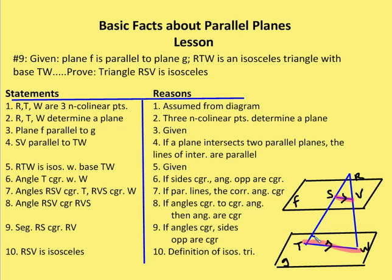I also know that angle RSV is congruent with angle RVS because if there are parallel lines, the corresponding angles are congruent. So RSV is congruent with RVS. More specifically, angle RSV is congruent with angle T, and angle RVS is congruent with angle W — those are the two sets of corresponding angles. Now I can say that angle RSV and angle RVS are congruent, because if angles are congruent to congruent angles: RSV is congruent to angle T, RVS is congruent to angle W, and angle T is congruent with angle W — therefore angle RSV is congruent with angle RVS.